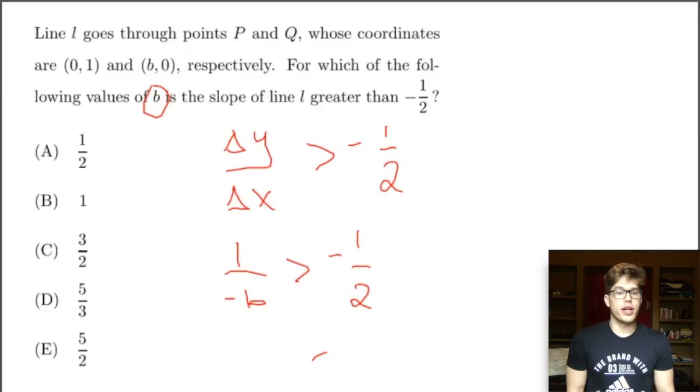So now we can multiply by -1, cancel these negative signs, and whenever you multiply through by -1 on both sides, you need to remember to flip your sign, flip your alligator mouth going the other way. So we are left with 1 over b is less than 1/2 and then again we're solving for b so now we need to reciprocate our fraction. Again, whenever we reciprocate our fraction we are going to be flipping our inequality so we are left with b must be greater than 2. We're looking at our answer choices. The only one where b is larger than 2 is choice E, 5 halves.